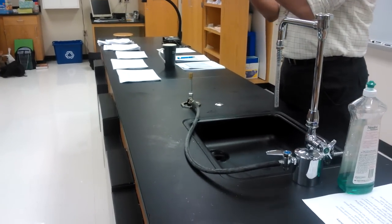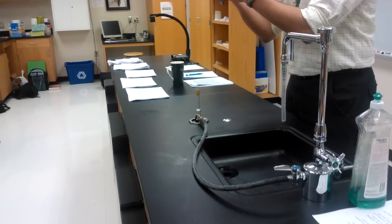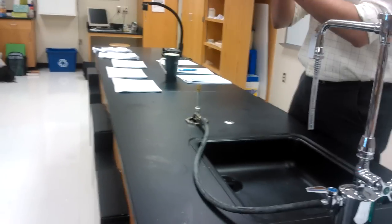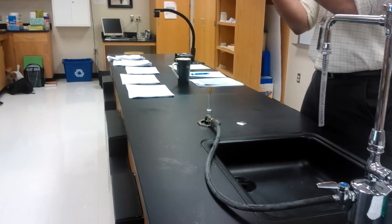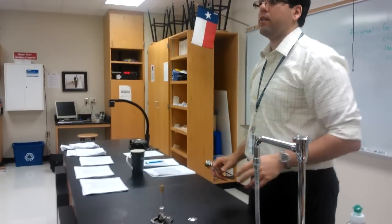Alright, so the striker works by swiping across creating a spark. In order to get a good spark, you need to pull towards you and pull across. The spark should look like this. That's a good spark. You should be able to do it once and that should be enough to light your Bunsen burner.